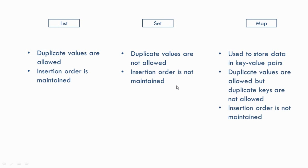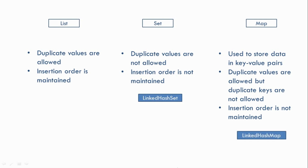Even though Set and Map do not maintain insertion order, some of their implementation classes do. For Set, we have LinkedHashSet which maintains insertion order. Similarly, for Map we have LinkedHashMap which maintains insertion order. That's it — this was a quick overview of the Java Collections Framework. We'll look at the practicals from the next tutorial, so thank you for watching and see you then.